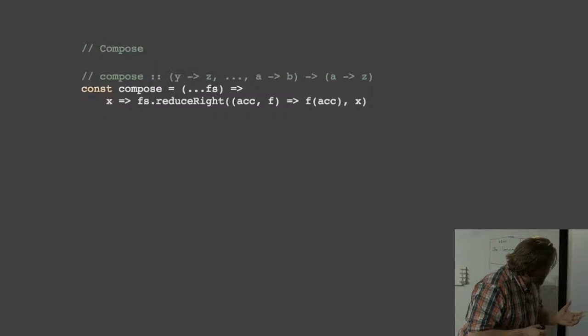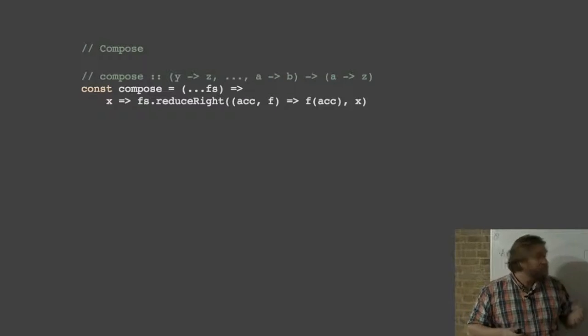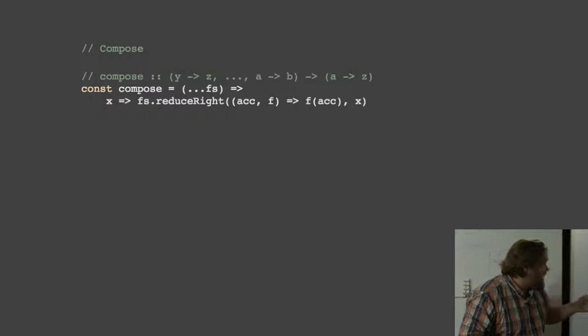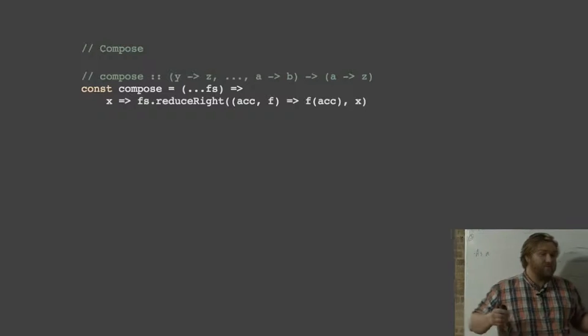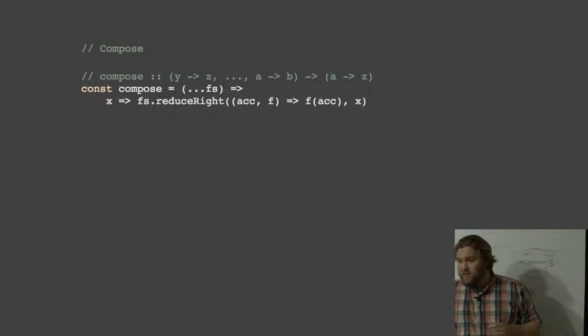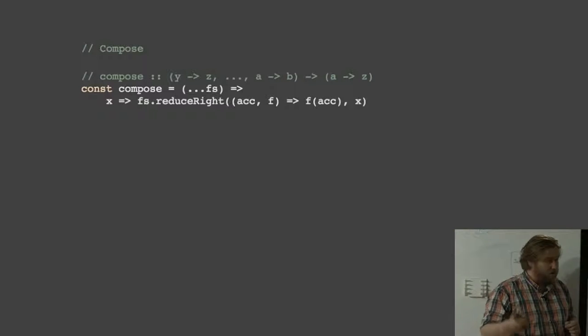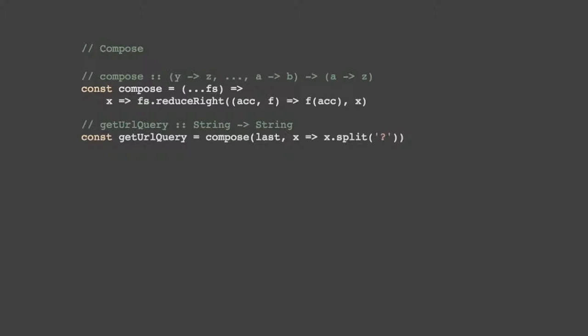So we start out with a very useful tool called compose. What compose does is it takes a bunch of functions and then returns a function that will call them one at a time from right to left. It will pass the data into the first one, then the result goes into the next one, and so on. We've got an example here of getURLquery, which splits the string by a question mark and then takes the last element of the array. We created this simple function in one line that gets the query part of a URL string.